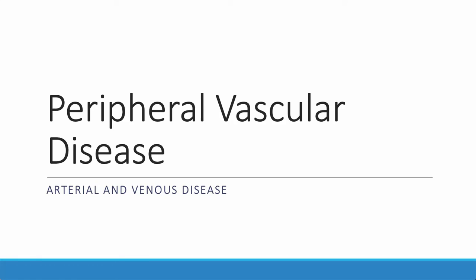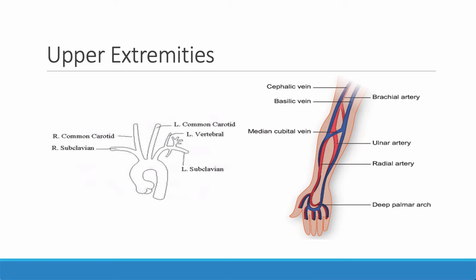Peripheral vascular disease is an all-inclusive term for arterial and venous disease that occurs in the extremities. It's very rare for someone to have upper extremity vascular disease — we don't see DVTs in the upper extremities, and we rarely see arterial disease there. We do see DVT in the upper extremity if there's instrumentation of those vessels, such as subclavian lines, but by and large we don't see arterial disease in the upper extremities.